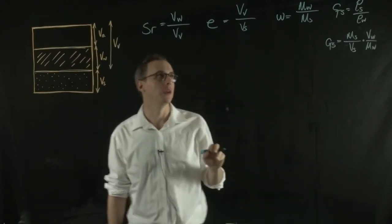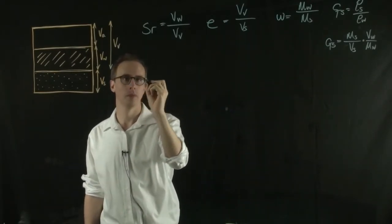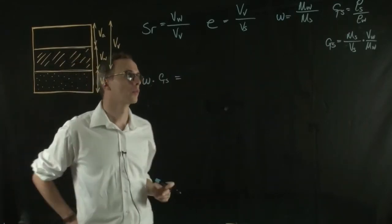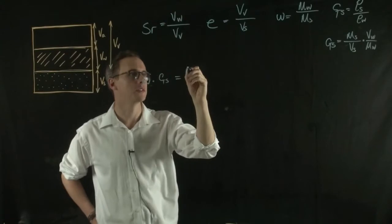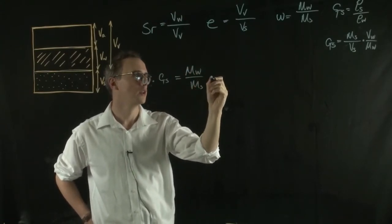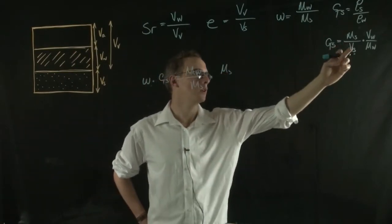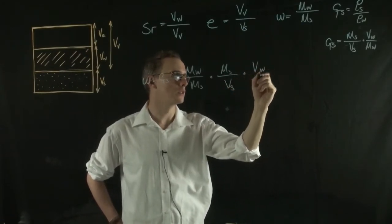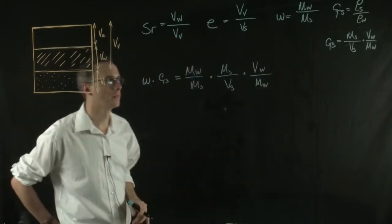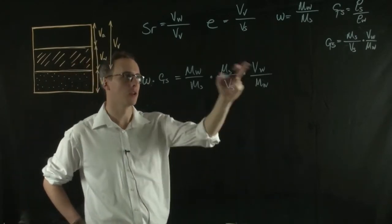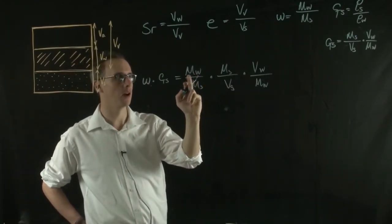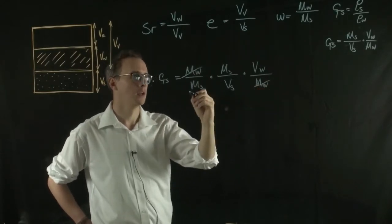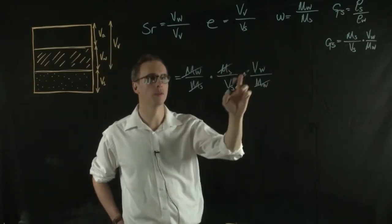If we take the specific gravity and multiply it by the water content, we have the water content — which is the mass of the water over the mass of the solid — multiplied by the mass of the solid over the volume of the solid, multiplied by the volume of the water over the mass of the water. The mass of the water cancels out and the mass of the solids cancel out, leaving us with the volume of the water over the volume of the solid.